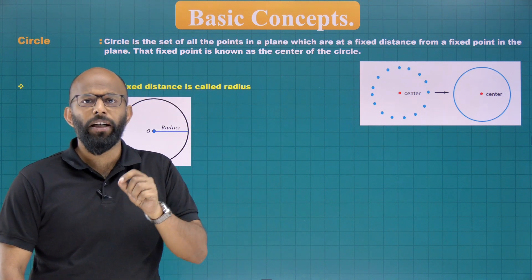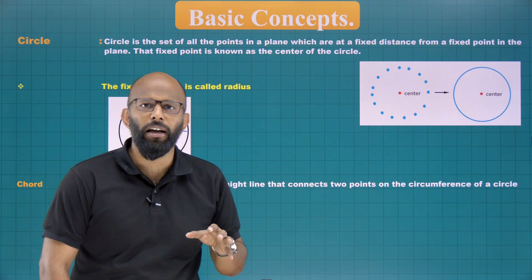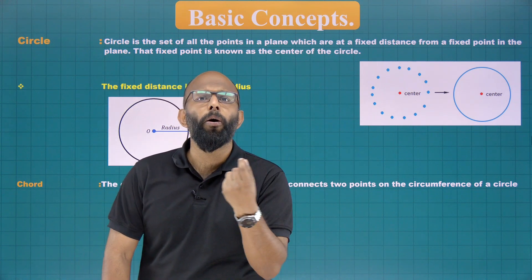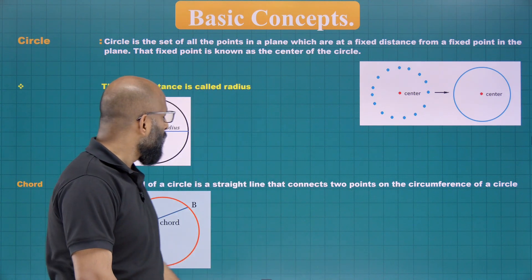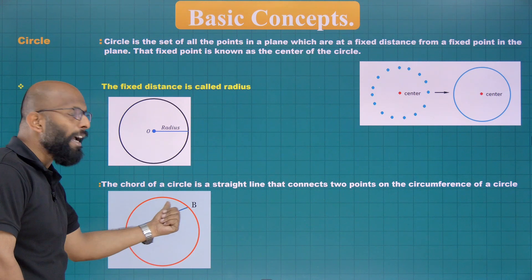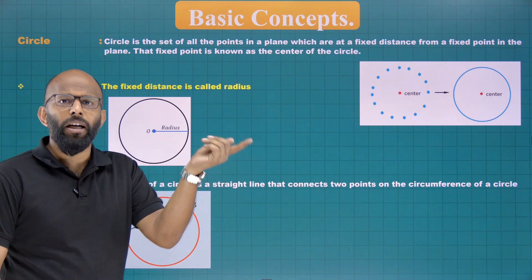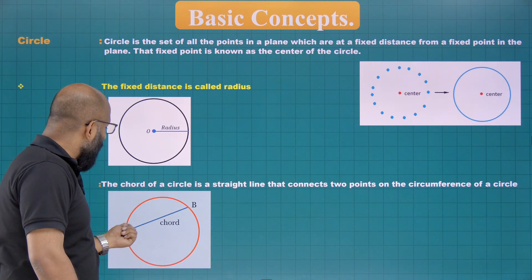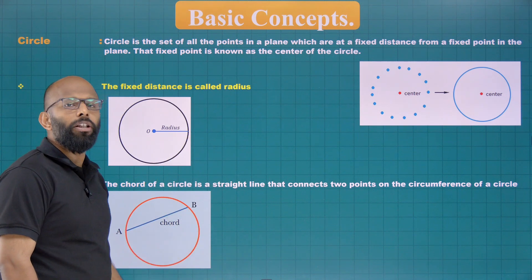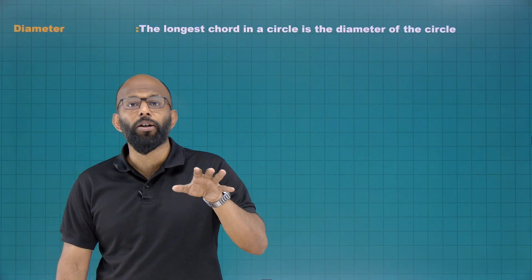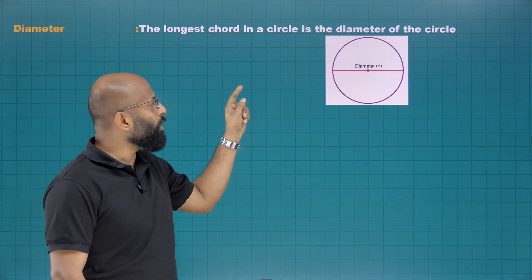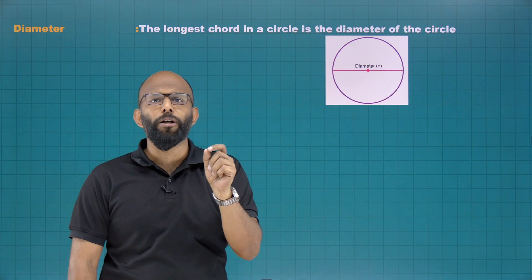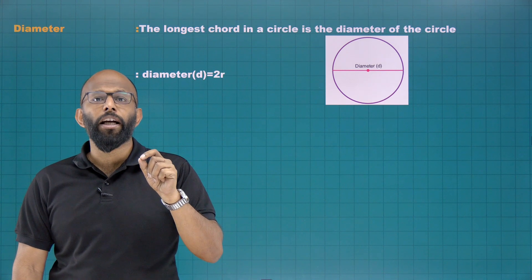After radius, we need to check what is the chord of a circle. A chord is a straight line that connects any two points on the circumference of the circle. You can see that A and B are two points on the circumference — that boundary. If you join these two points you get a chord. Now, diameter: the longest chord which passes through the center is called the diameter. The relation is: diameter is equal to two times radius.